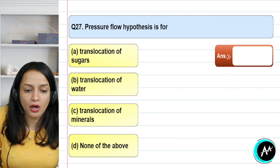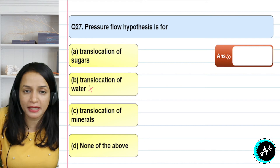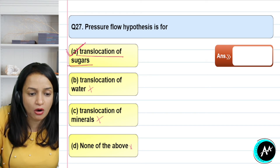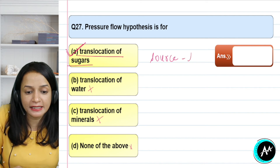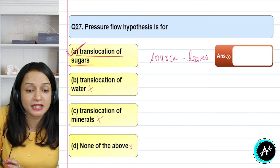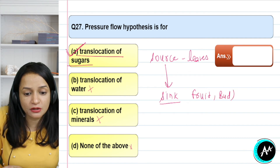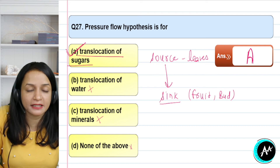Question 27: the pressure flow hypothesis is for what? Options are translocation of sugar, translocation of water, translocation of minerals, or none of the above. Water and minerals are mainly translocated through the xylem, so pressure flow hypothesis is not for them. The pressure flow hypothesis is for translocation of sugar through phloem — from source (green leaves with high sugar concentration from photosynthesis) to sink (fruits, buds, or newly formed leaves needing food for growth). The correct answer for question 27 is option A — translocation of sugar.